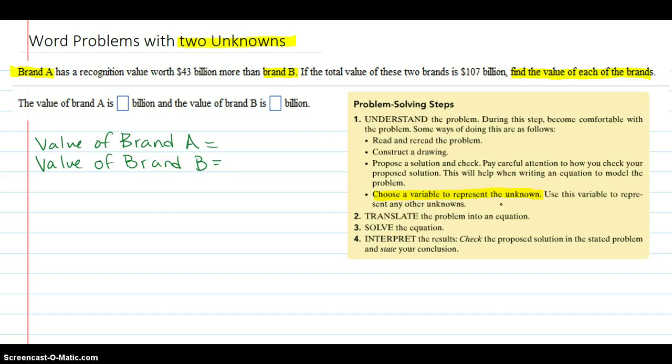And I'm going to choose a variable to represent one of the unknowns. I'll just make a little change there. I'm going to say the value of brand B, I'm going to choose X. And the reason I'm going to choose X is because it's listed second. It makes it a little bit easier.